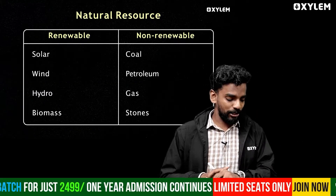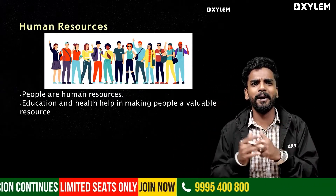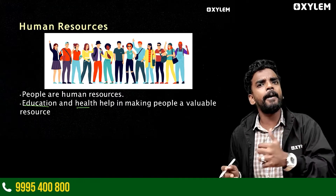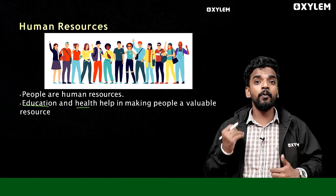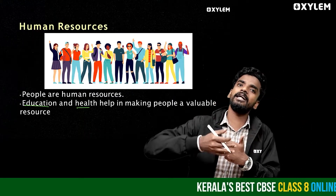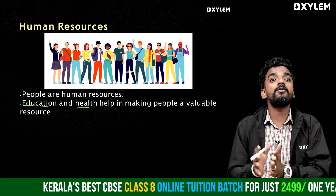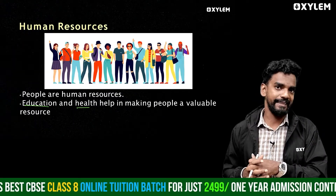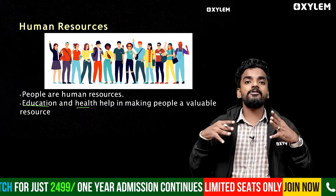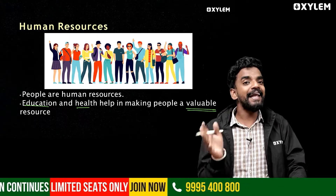Now talking about human resources — people who can learn through education and health are human resources. Education — from graduation to post-graduation — improves the value and importance of a human resource. Health care is also important. Going to the gym, maintaining fitness — these make us better, more valuable resources. Education and health are the key components of human resource development.